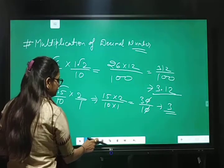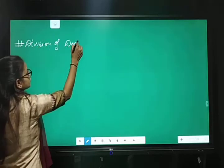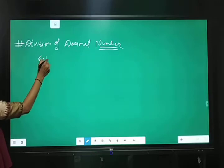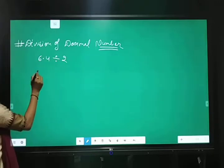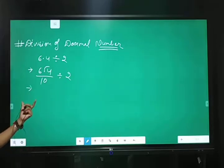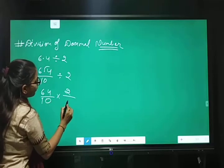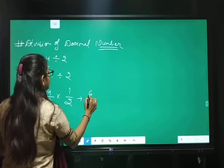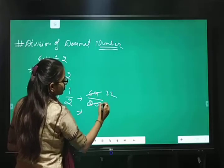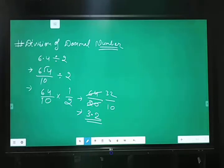Next division of decimal number. 6.4 divided by 2. Remove the decimal point. First step is 6.4. 10 divided by 2. 64 upon 10. Reciprocal the second fraction and sign will be changed. So, come 2 upon 1 upon 2. 64 ones are 64 and 10 twos are 20. 3, 2 times and 10 times. So, answer is 3.2.